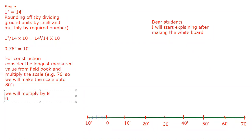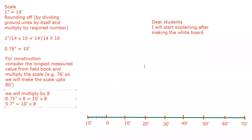We calculate 0.76 multiplied by 8, and 10 multiplied by 8. This gives us something around 6 — approximately 5.7 inches. So we will draw a line equal to 5.7 inches.